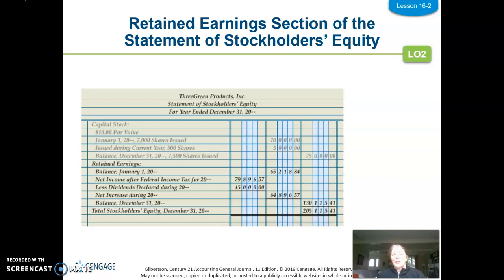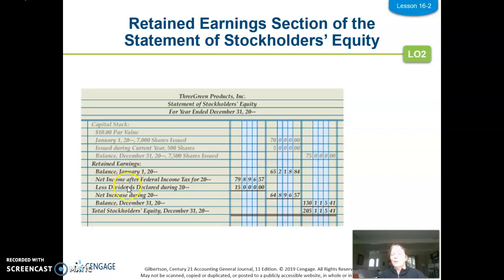The next section we want to do is retained earnings, with a colon. We're progressing the balance and showing the activity from January 1st to December 31st. On January 1st, I get that beginning amount from the general ledger — what I started with in retained earnings. The next section with these three lines is trying to figure out the net increase or decrease in the account.